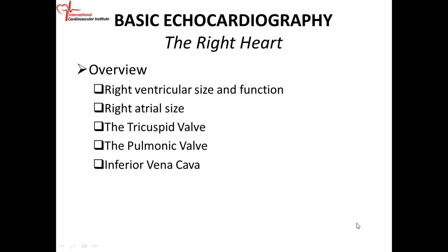In discussing the right heart, we're going to look at the right ventricle size and function. We have to know how to identify what we're talking about as the right ventricle. We're going to look at the right atrial size and function, the tricuspid valve, pulmonic valve, and inferior vena cava. So we're going to look at all the structures on the right side of the heart.